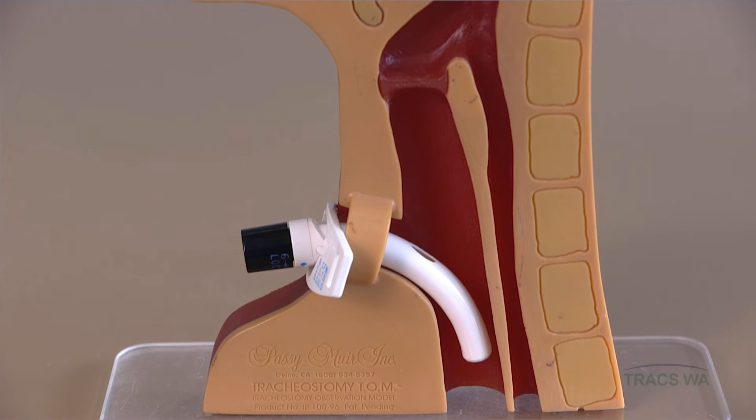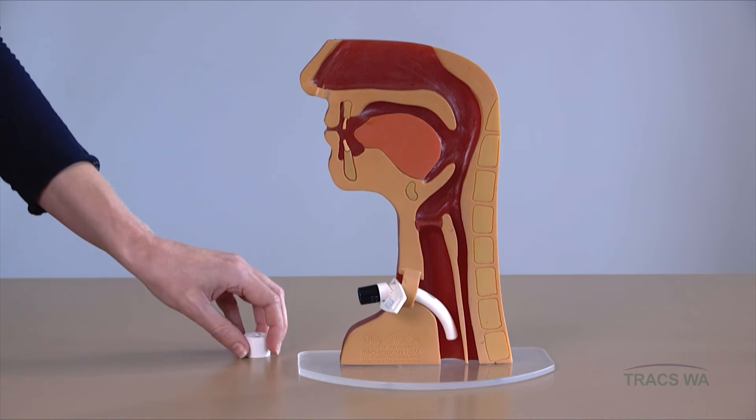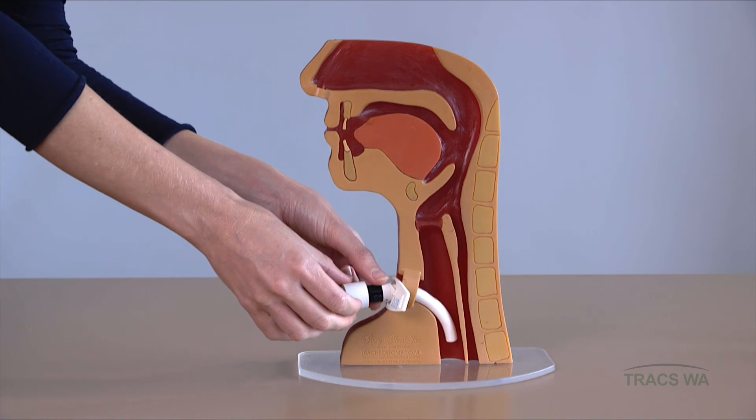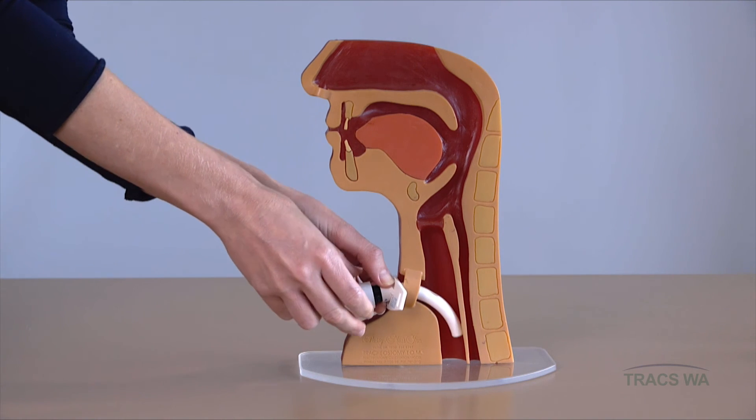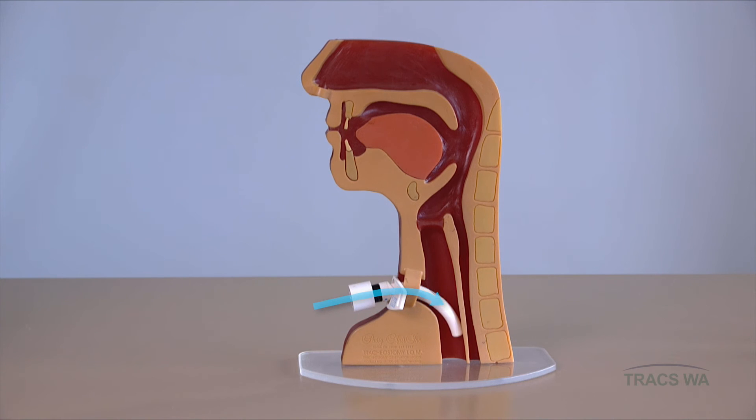A fenestrated tracheostomy tube allows more air to escape through the fenestration and the upper airway. Placing a speaking valve on the end of the tracheostomy tube allows air to be inhaled through the valve and the tracheostomy tube and then exhaled through the upper airway as the one-way valve automatically closes.